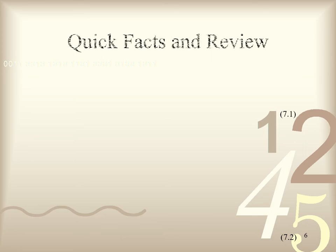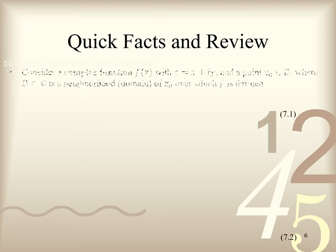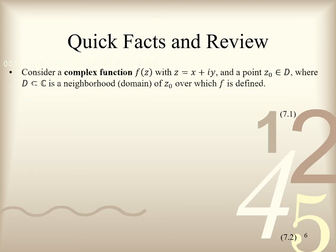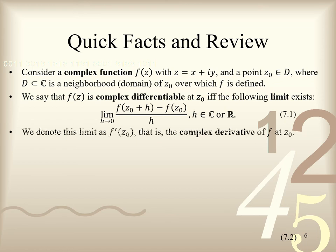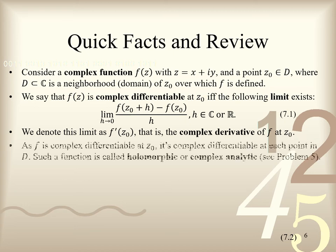Here are some quick facts and review that we will need to solve problem 7. Consider a complex function f of z and a point z naught in a domain D in the complex plane over which f is defined. We say that f of z is complex differentiable at z naught if and only if the following limit, given in 7.1, exists. We denote this limit as f prime at z naught, that is, the complex derivative of f at z naught. As f is complex differentiable at z naught, it's complex differentiable at each point in the domain D. Recall from the problem 5 video that such a function is called holomorphic, or complex analytic.